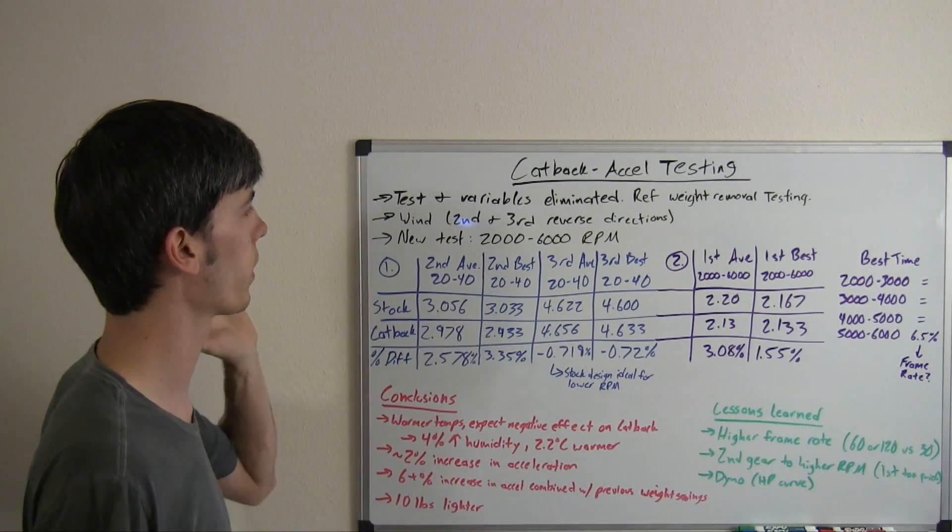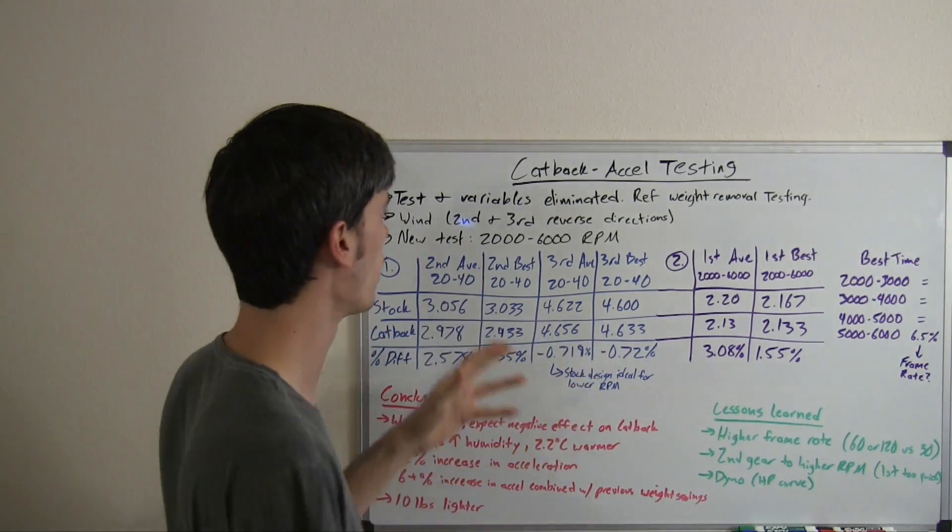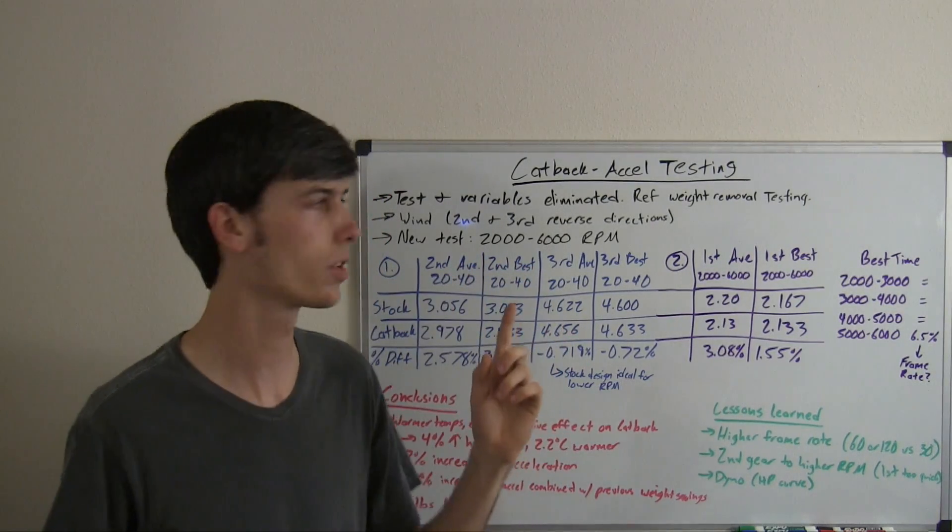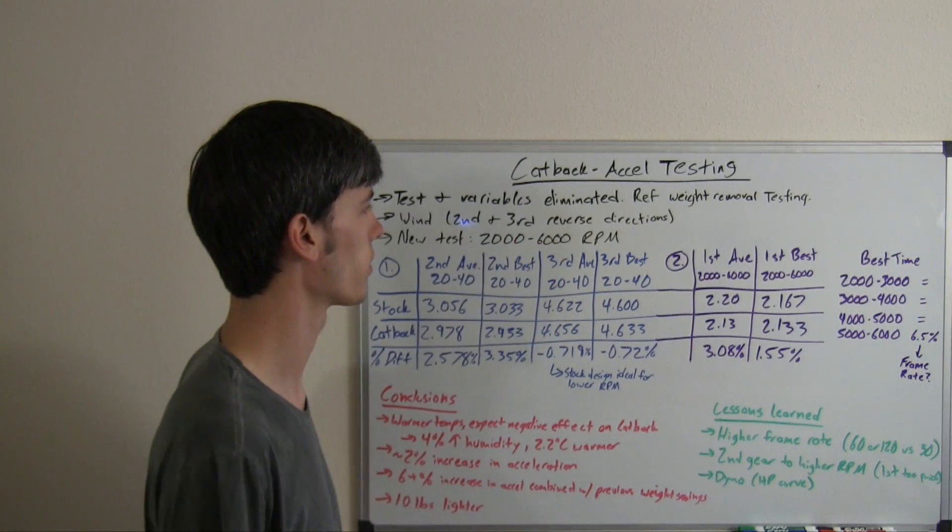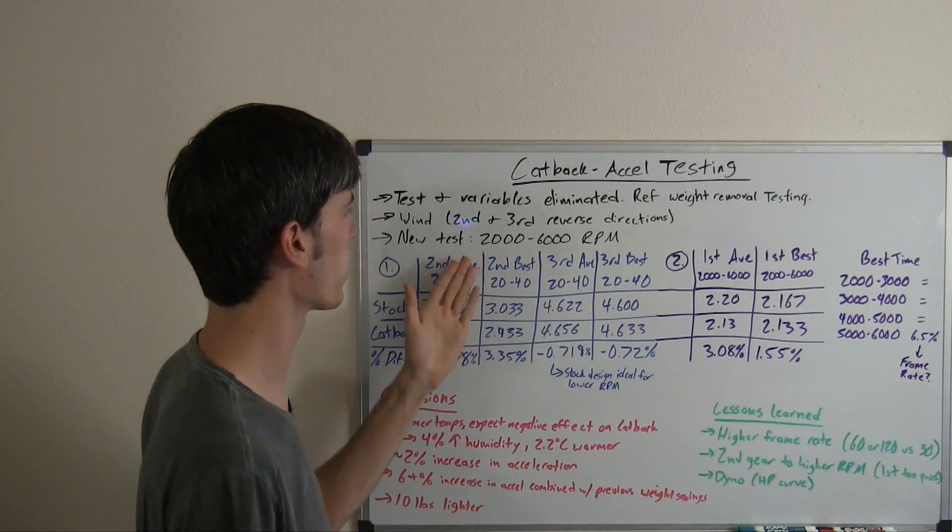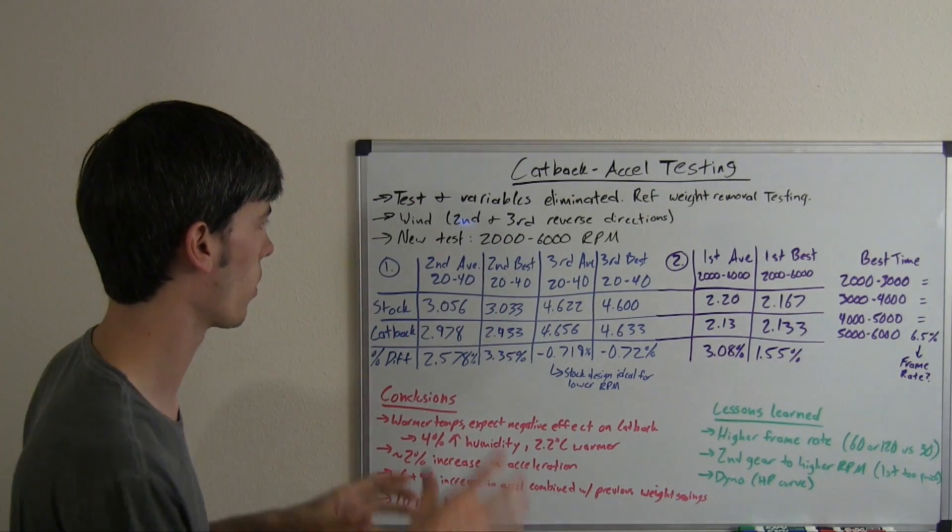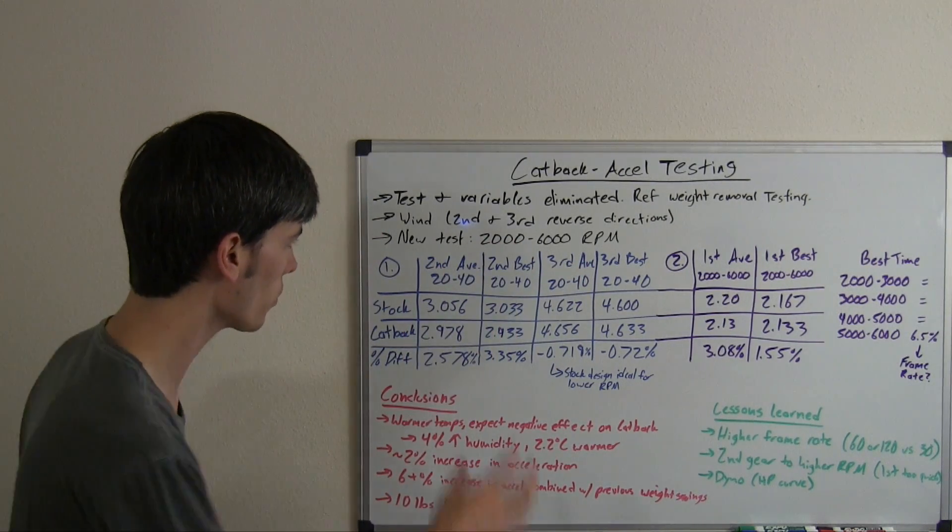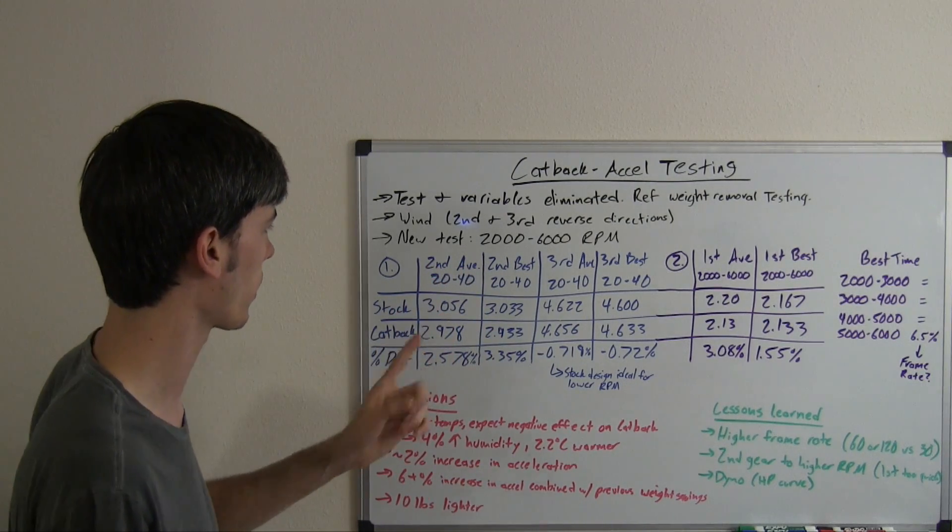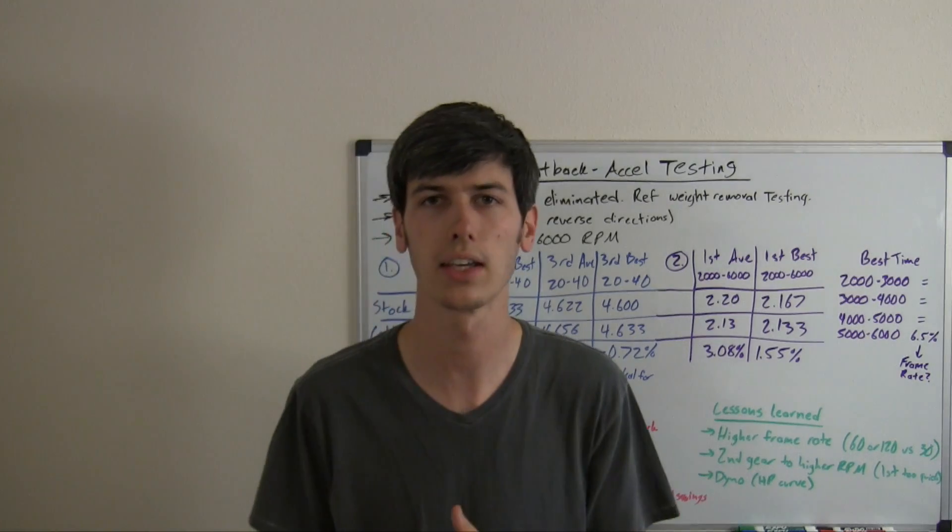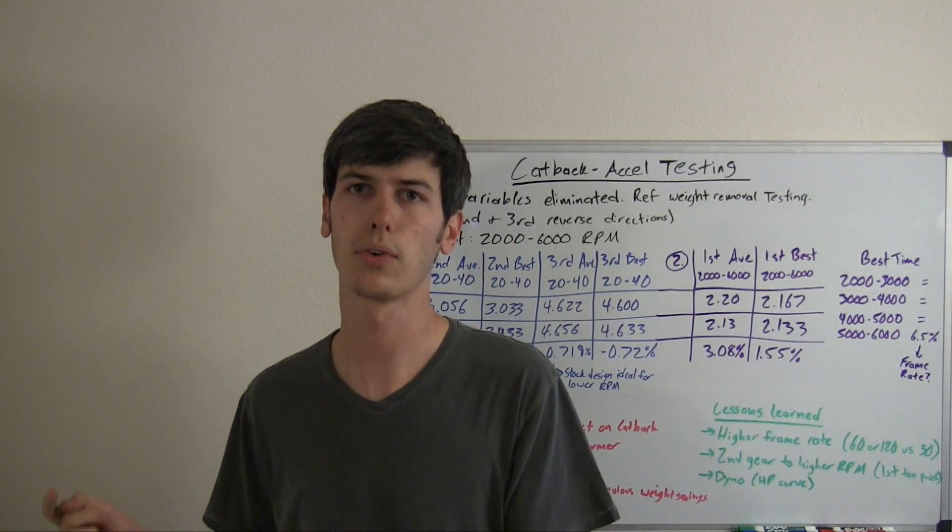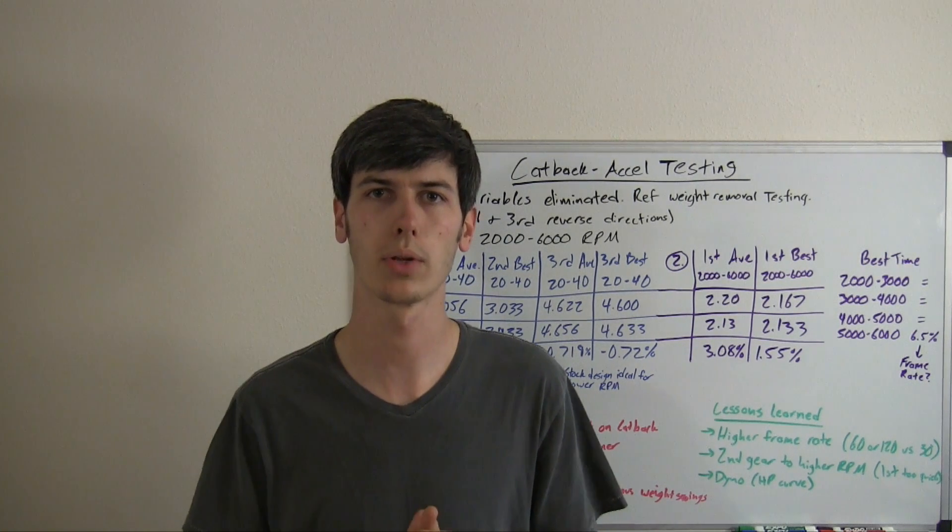I've also incorporated a new test in this video where I'm simply timing in first gear how long it takes for the engine to get from 2,000 to 6,000 RPM while in first gear. An acceleration test going across the whole rev range. I'll talk about that one as well. Let's jump in and watch the video on the second gear testing. This is going to be second gear stock and second gear with the cat-back exhaust accelerating from 20 miles an hour to 40 miles an hour.